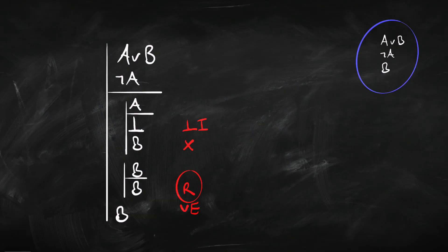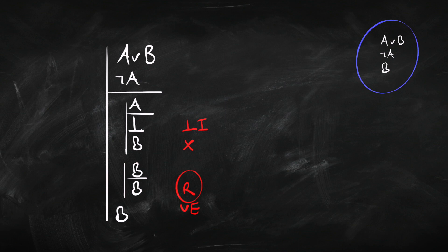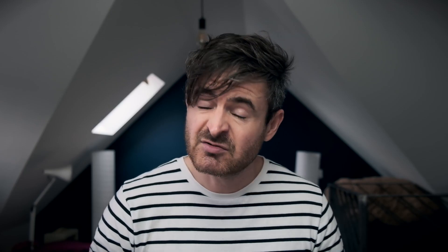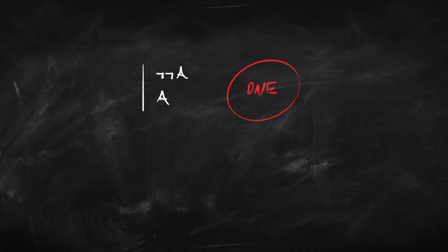Repetition can be a pretty useful rule. For instance, in the previous example where we assumed B and then used repetition to infer B again — if we didn't do that, we wouldn't have the right form of inference to conclude B using reasoning by cases. So repetition was kind of useful there; it meant we could avoid the detour through conjunction introduction and then elimination. Here's another really useful rule that we can derive: double negation elimination.